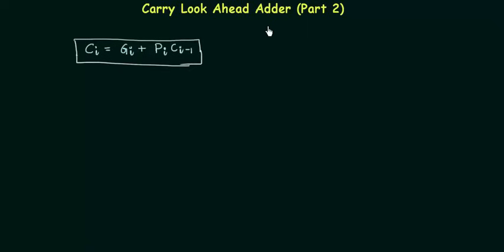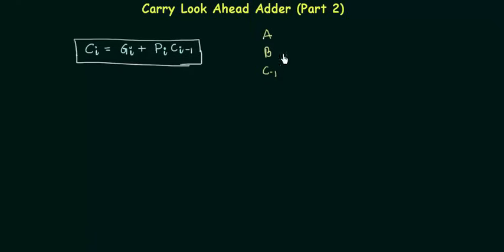Welcome to the second part of Carry Look Ahead Adders. In the last presentation we found that Ci is equal to Gi OR Pi·Ci-1. We are going to use this equation to predict the carry, and the prediction of carry is everything in Carry Look Ahead Adders. At the start of addition you have number A, number B, and C-1 which is the carry input to your first half adder.